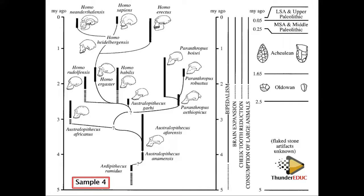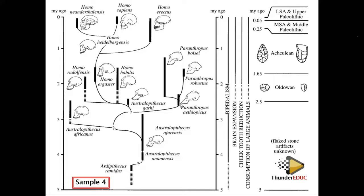Now compare the tree with the tool timeline. Which species first used tools? Homo habilis is traditionally said to be first. But looking at the tree, the oldest tools align with earlier species. Drawing a line shows that Paranthropus, Australopithecus, and also Homo habilis all used tools. Draw a line touching the scale to interpret this.